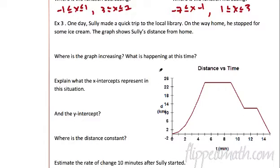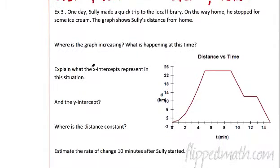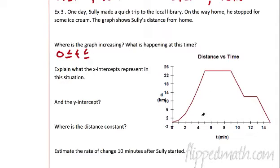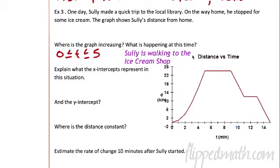Last one — Sully made a quick trip to the local library. On his way home, he stopped for some ice cream. Here's the graph. Where is the graph increasing? The graph is increasing from zero — this is time in minutes, we're looking at the distance — the time has to be between zero and where it's increasing right here, which is five. What is happening at this time? He's walking to the ice cream shop.